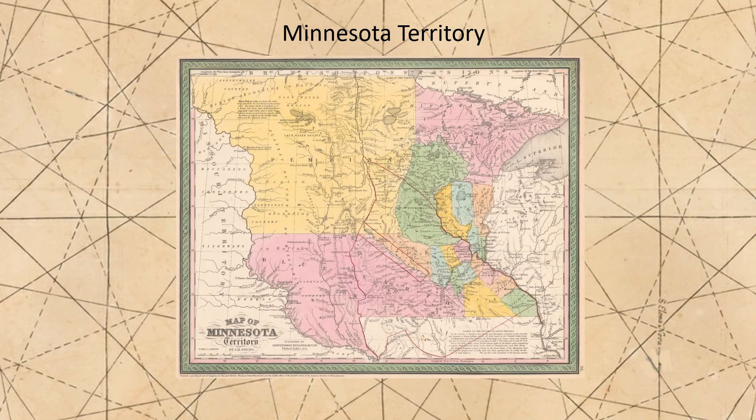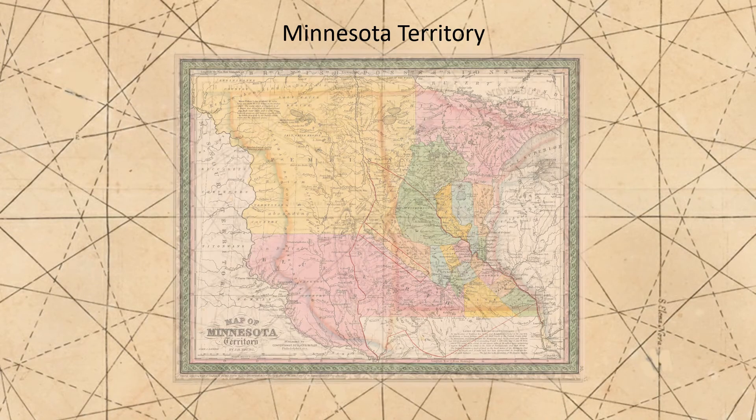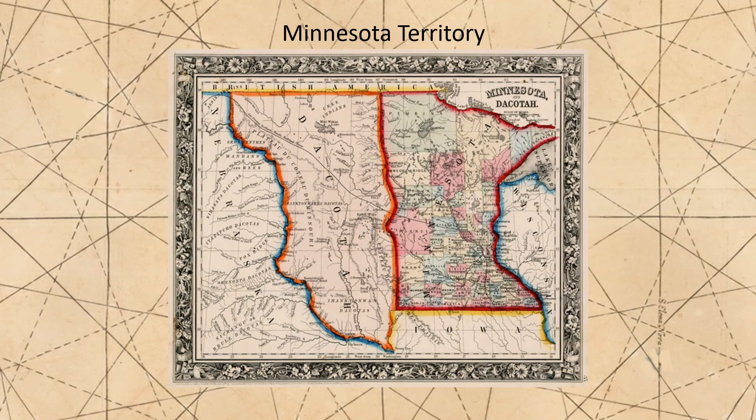One was the 1858 creation, out of the Minnesota Territory, of the new state of Minnesota. Most of the settlement in the Minnesota Territory was along the Mississippi River, and so the new state was carved out of the eastern part of the territory. It is one of only two states — the other being Louisiana — that lie on both sides of the Mississippi River. With the creation of the new state, the western half of the old Minnesota Territory became the unorganized district of Dakota.